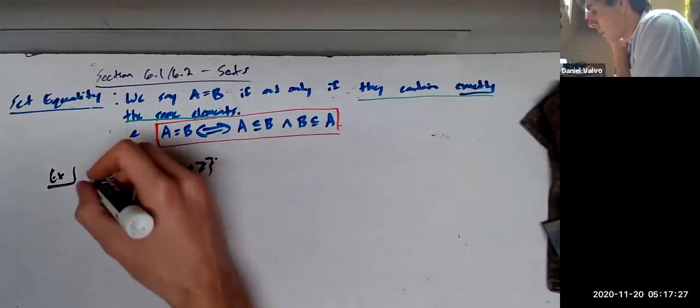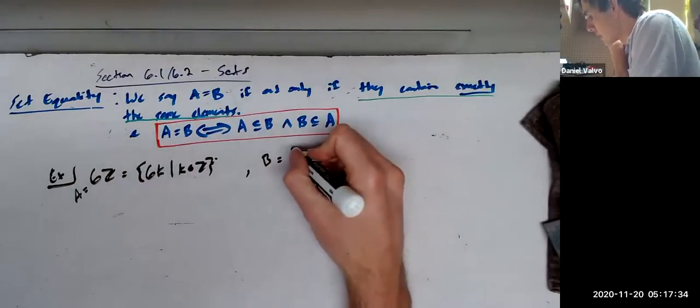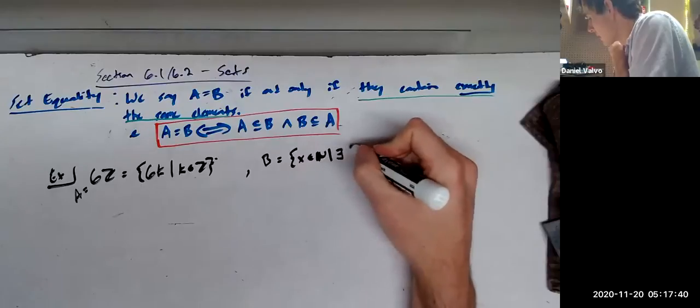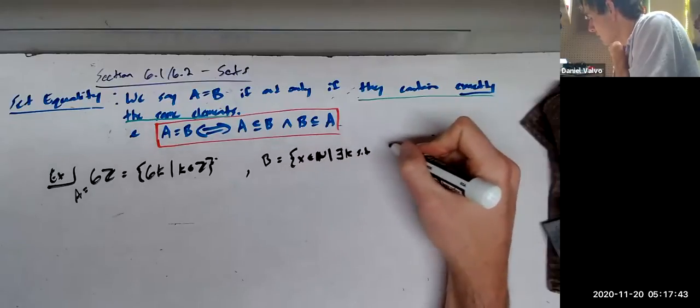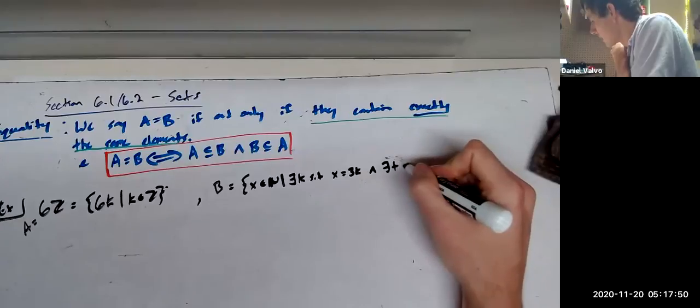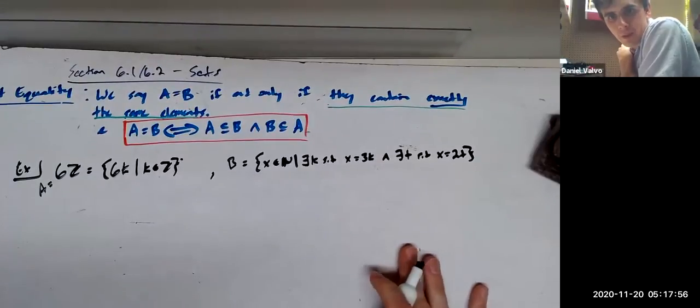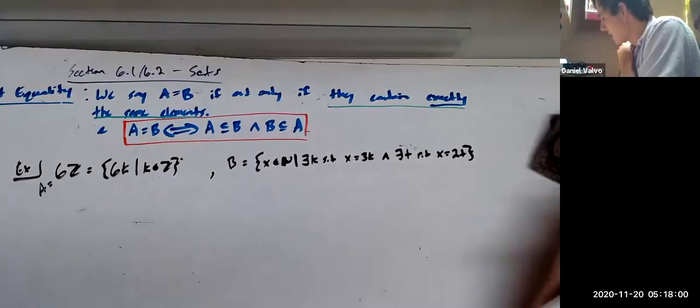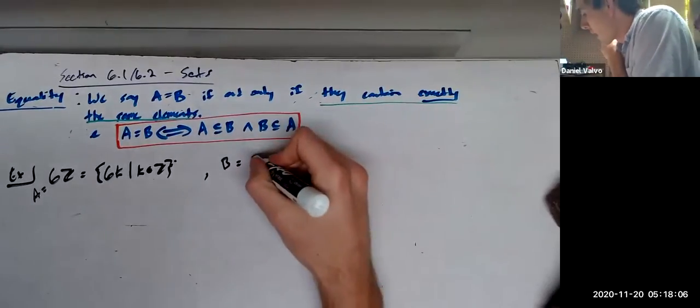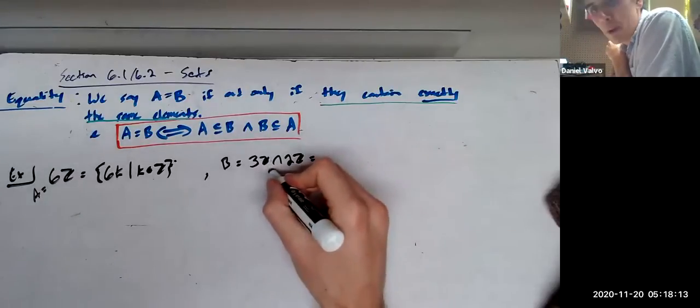And then we'll look at, we'll call this A, and then we'll call B, that's going to be the set of all x in the natural numbers, such that there exists a k, such that x equals 3k, and there exists a t, such that x equals 2t. So this is going to be B. And actually, I'm sorry, I'll write this differently. But I'm going to rewrite this, don't worry. B, what I'm going to write it as, is going to be 3Z intersect 2Z. We haven't defined this yet, but by the end of the day, we will.